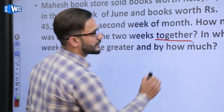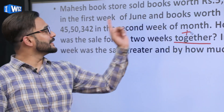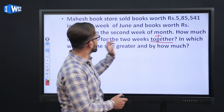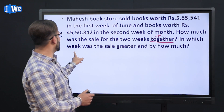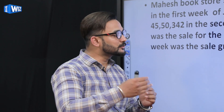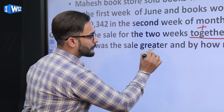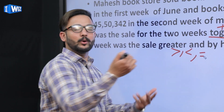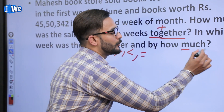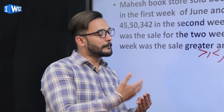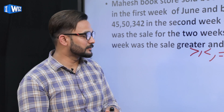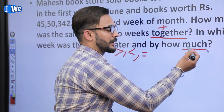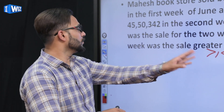When the word 'together' comes, it means you have to add both — together in Hindi means add. You need to find the combined sale for both weeks. Then it asks: in which week was the sale greater? Compare both weeks, and by how much? That is a comparison — and since they are asking the difference between the two, we will subtract.